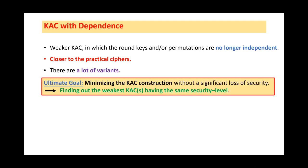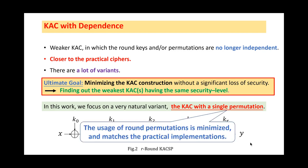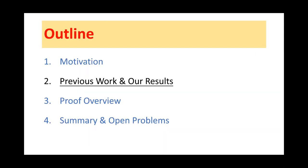To match the practical ciphers, our ultimate goal is to minimize the KAC construction. In other words, we should find out the weakest KAC having the same security level. In this work, we focus on a very natural variant, the KAC with a single permutation. We can see that, in the KACSP, the usage of round permutations is minimized and matches the practical implementations. Okay, we now move to the second part. In this part, we will review some related work and also talk about our results.